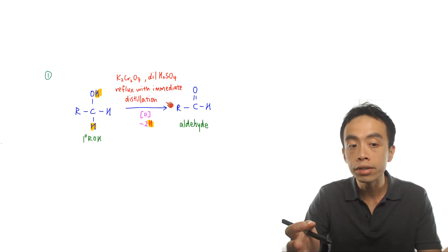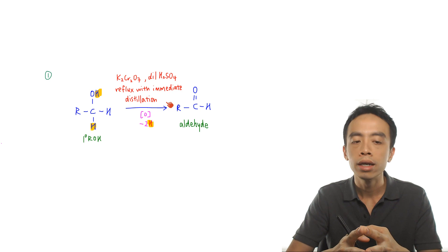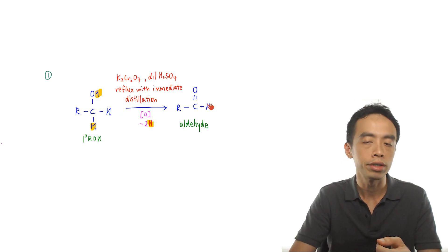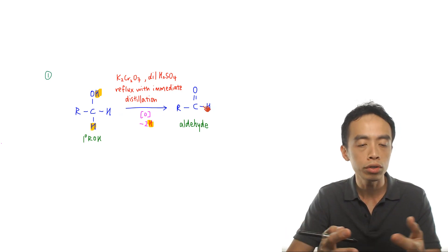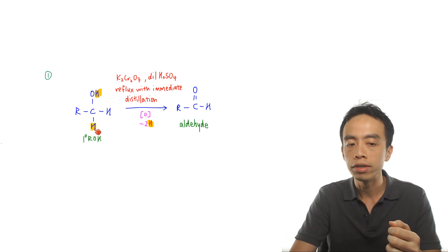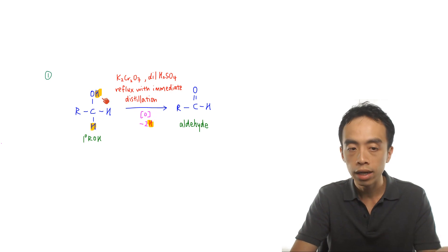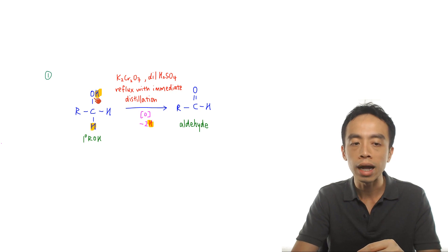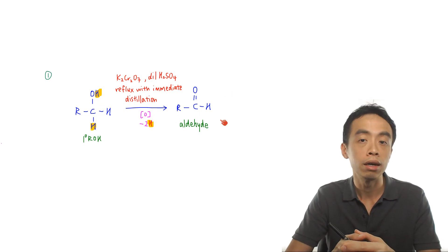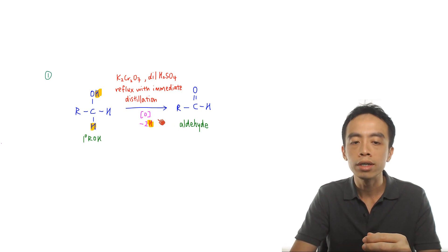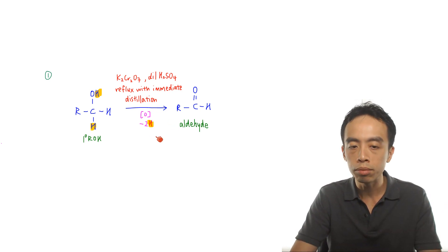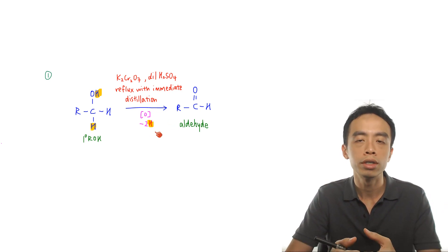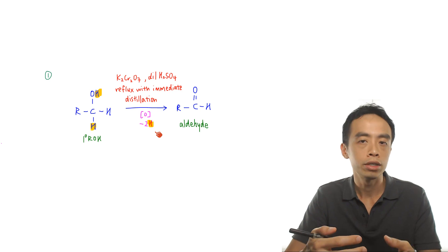To understand why this is an oxidation: we remove a hydrogen attached to carbon, remove a hydrogen attached to oxygen, then form a double bond between carbon and oxygen to get the aldehyde functional group. This is considered oxidation because we are losing two hydrogens — losing hydrogen is defined as oxidation.